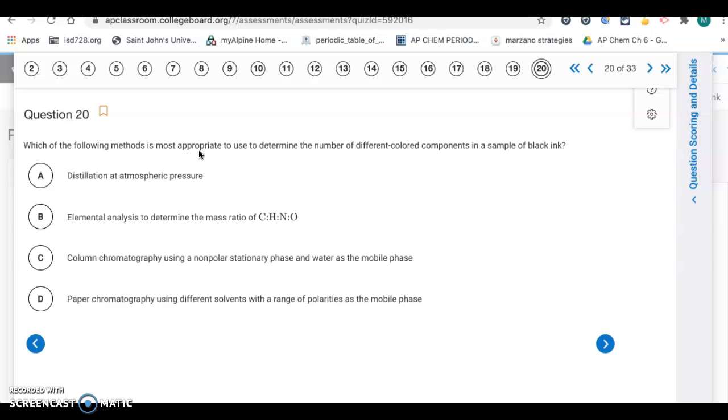Question 20. Which of the following methods is most appropriate to determine the number of different colored components in a sample of black ink? When you have a bunch of different colored components, you usually want to try paper chromatography with different solvents to get them to separate. Letter D is the answer.